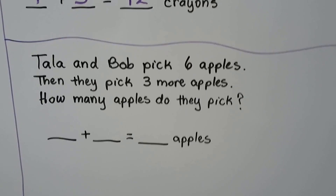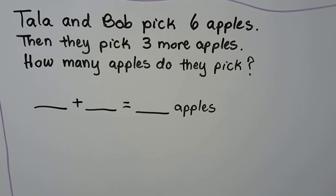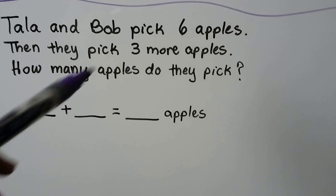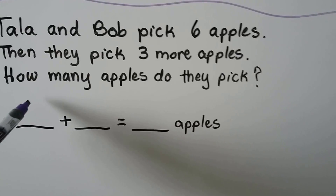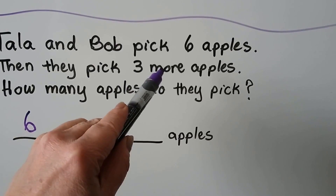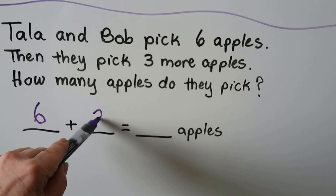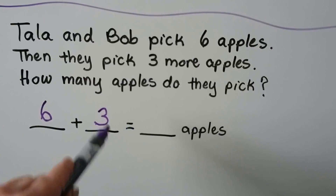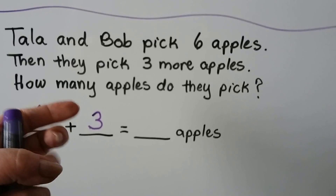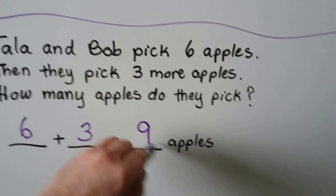Tala and Bob pick 6 apples, then they pick 3 more. How many apples do they pick? We start with the largest addend, 6. The word 'more' tells us it's addition. We start with the 6 and add on the 3: 6, 7, 8, 9. That's 9 apples — that's how many they picked.